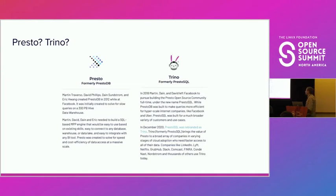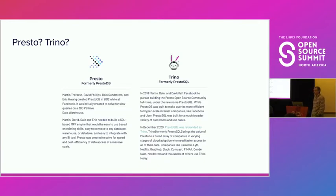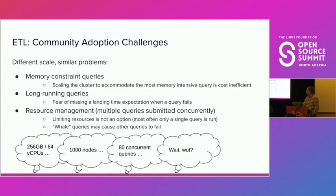Up until now we've been mostly talking about Presto, but the presentation says Trino. Presto was originally created by Martin, Dain, David, and Eric at Facebook in 2012. In 2018, the original founders decided to leave Facebook to focus on building a community-centric project. They created a fork called PrestoSQL that was later rebranded to Trino. But Trino in its core is still the same project led by the same core engineers.